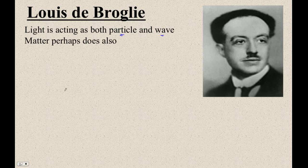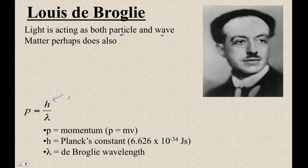I'm just going to hit the right arrow. This is the formula as it appears in the data packet, and so this is momentum, that's just m times v. That's Planck's constant, and that's the de Broglie wavelength.